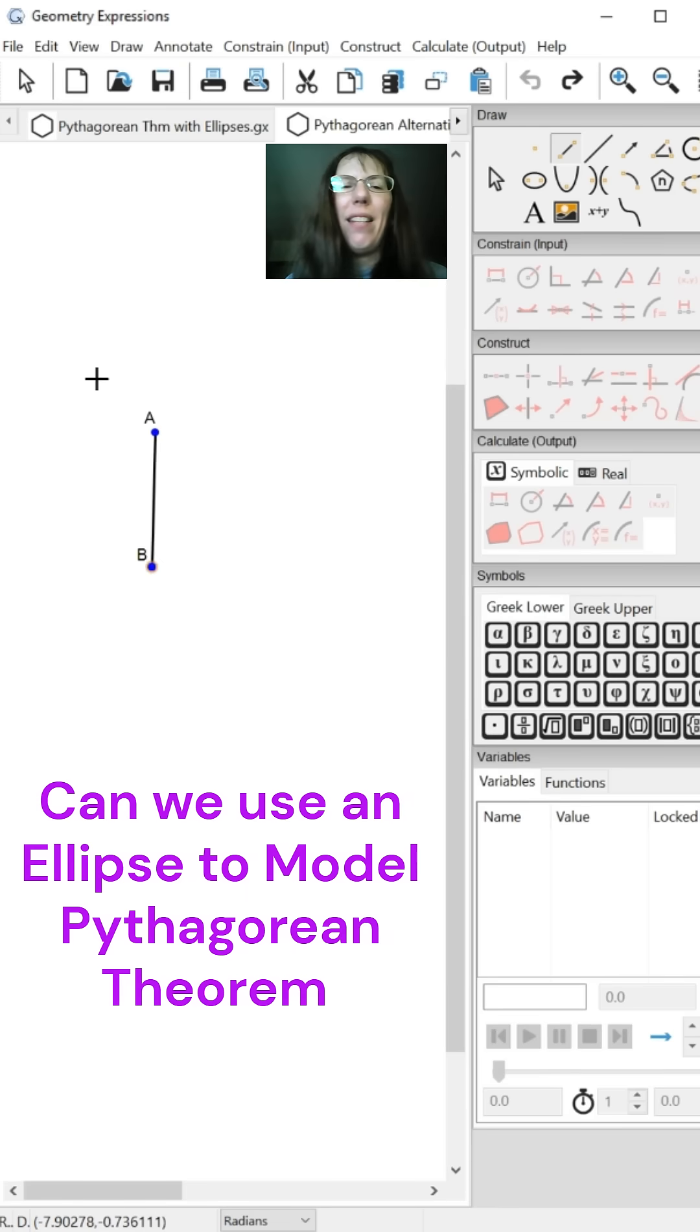This is Alita, a math teacher in Oregon. Can we model the Pythagorean Theorem with ellipses instead of squares?